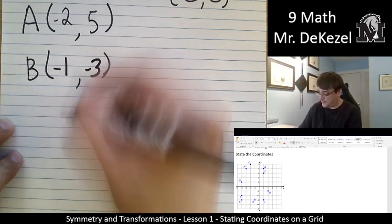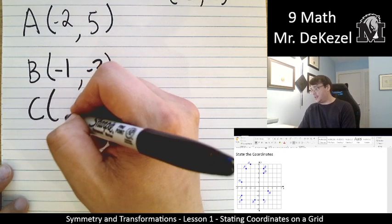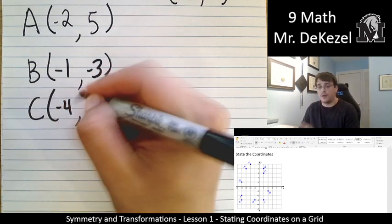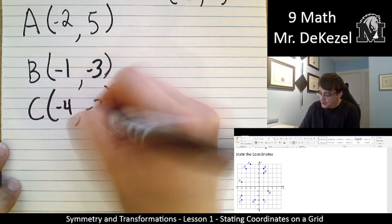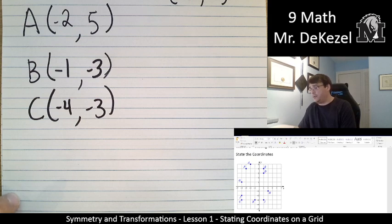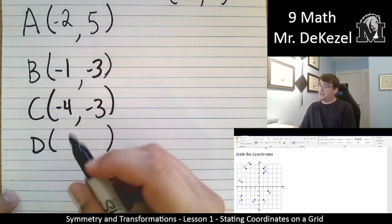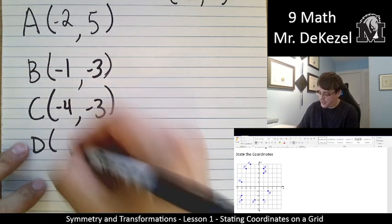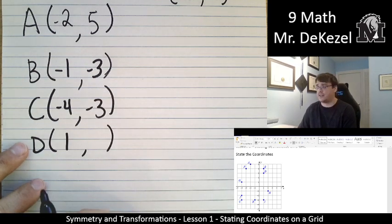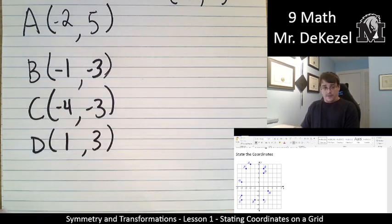Let's do C. The x value for C is minus 4. It goes over 4 to the left. And 1, 2, 3, minus 3, it goes down. Each of these points are going to be unique because none of them overlap. Let's do D next. D is on the right-hand side. It is over to the right one, so that means it is a positive 1 for the x value. And 1, 2, 3 up, so it's a positive 3 for the y value.